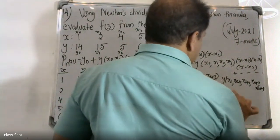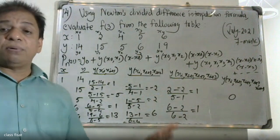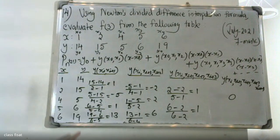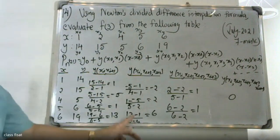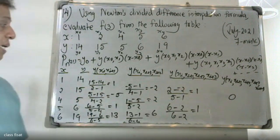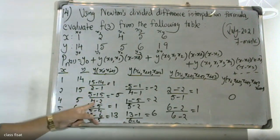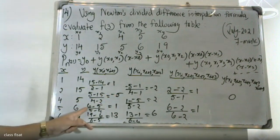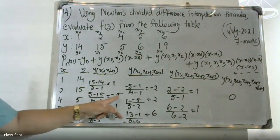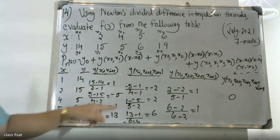With the first divided difference and the second divided difference computed, we can get the answer. We have: 15 minus 14 over 2 minus 1; 5 minus 15 over 4 minus 2; 6 minus 5 over 5 minus 4; and 19 minus 6 over 6 minus 5. So over the values we compute these first divided differences.